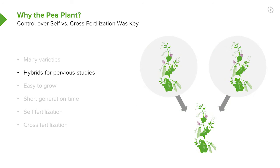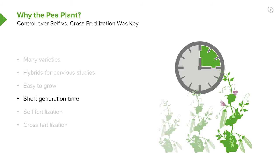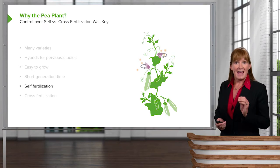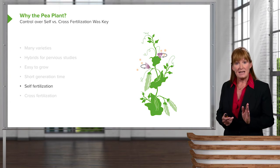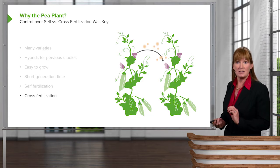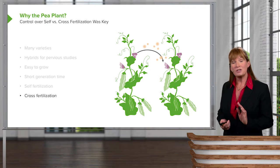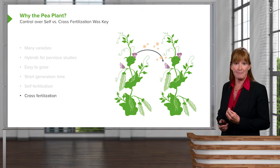In addition, there had already been previous work in which plants had been hybridized. They're easy to grow and they don't take a lot of time to grow. In addition, they were capable of self-fertilizing and, with some modifications, cross-fertilizing. So Mendel had ultimate control of his model of study.